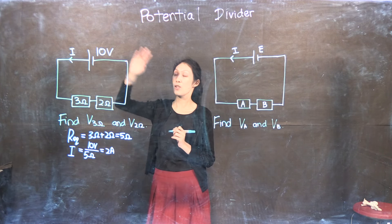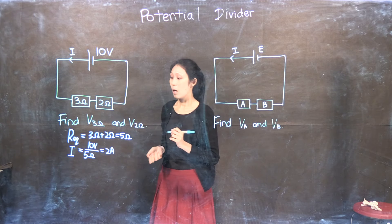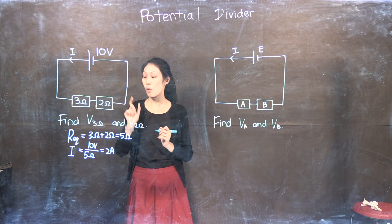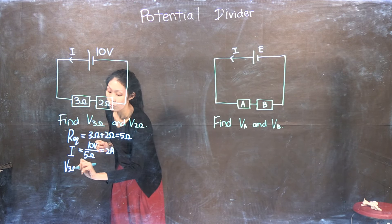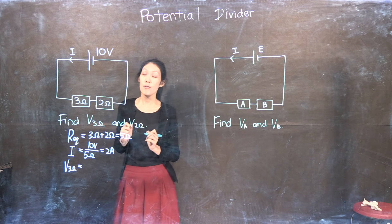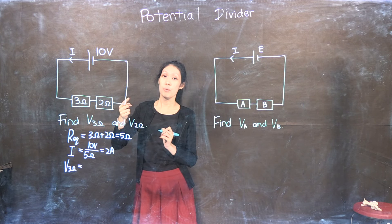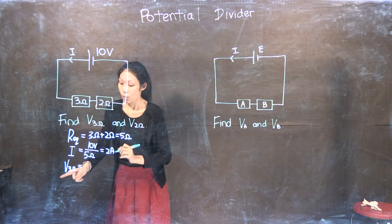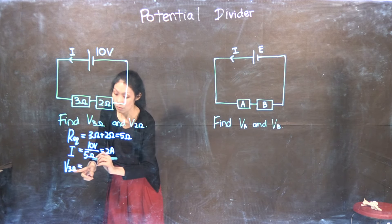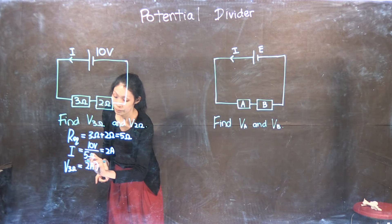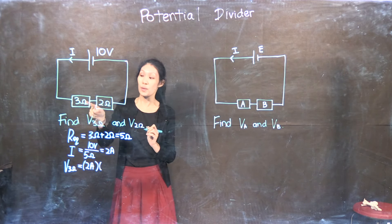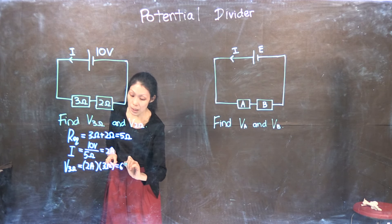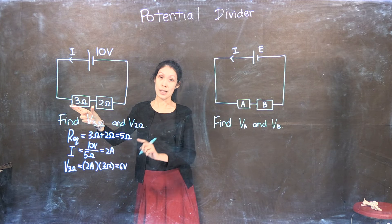This tells us that two amperes of current is running in the circuit. Now we are ready to find the potential difference across my three ohms resistor and two ohms resistor. The potential difference across the three ohms resistor can be found using V equals IR. The current going through this resistor is two amperes, and the resistance is three ohms, so the potential difference across my three ohms resistor is six volts.